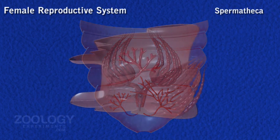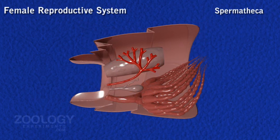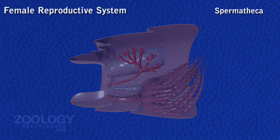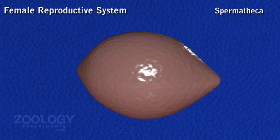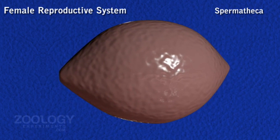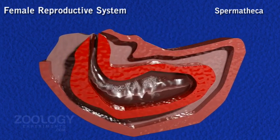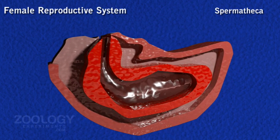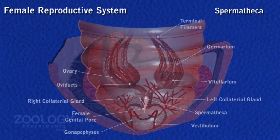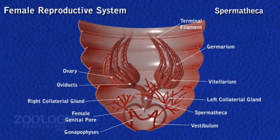A spermatheca consisting of a left sac-like and right filamentous cecum opens by a median aperture in the dorsal wall of the genital pouch on the ninth sternum. At the tip of a small spermathecal papilla in a fertile female, the spermatheca is found filled with spermatozoa received during copulation from the male.